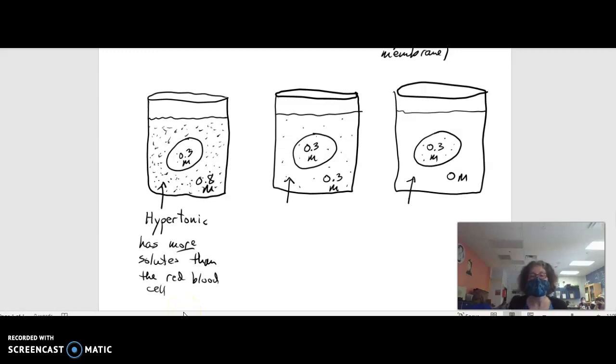The second beaker, since the solute concentration is the same, we say that that is isotonic. Maybe you remember that word, iso meaning same. So this is an isotonic solution to the red blood cell. It is isotonic to the cell, has the same concentration of solutes as the RBC.